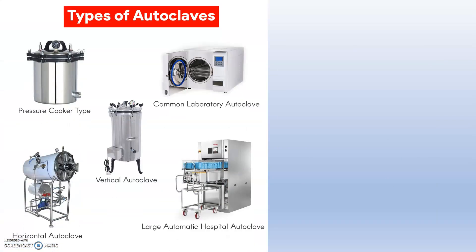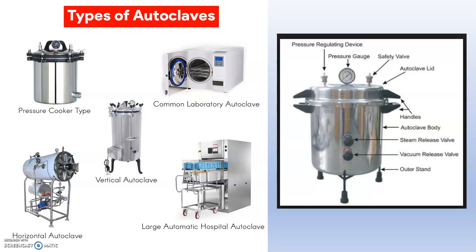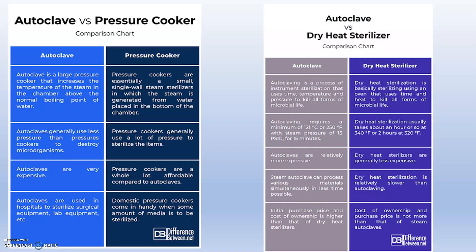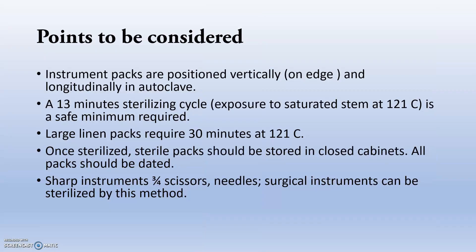Types of autoclaves include pressure cooker type, vertical autoclaves, common laboratory autoclaves, horizontal autoclaves, and large automatic hospital autoclaves. There is also a comparison between autoclaves and a pressure cooker, and between autoclaves and dry heat sterilizers. Instrument packs are positioned vertically, on edge and longitudinally in autoclaves. A 13-minute sterilizing cycle at 121°C is the safe minimum required period. For large linen packs, it requires 30 minutes at 121°C. Sharp instruments, scissors, needles, and surgical instruments can be sterilized by this method.